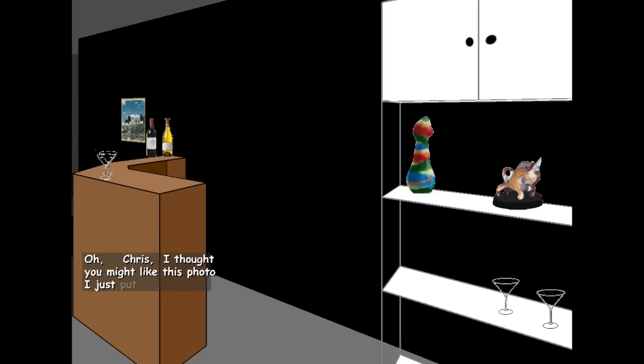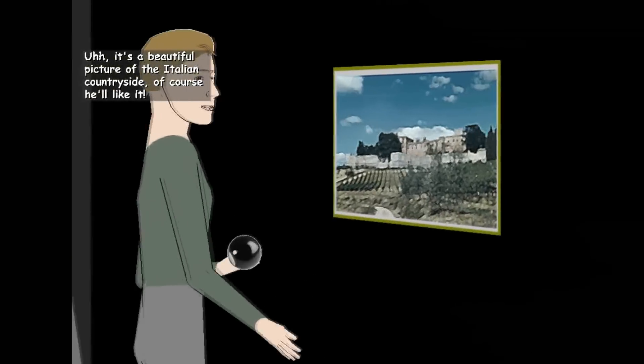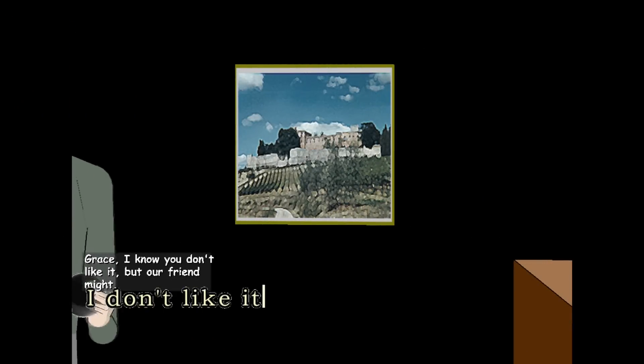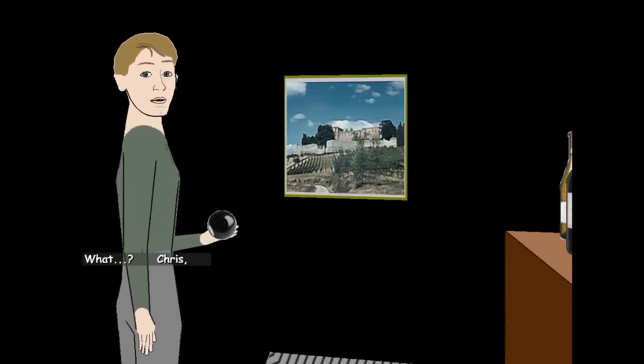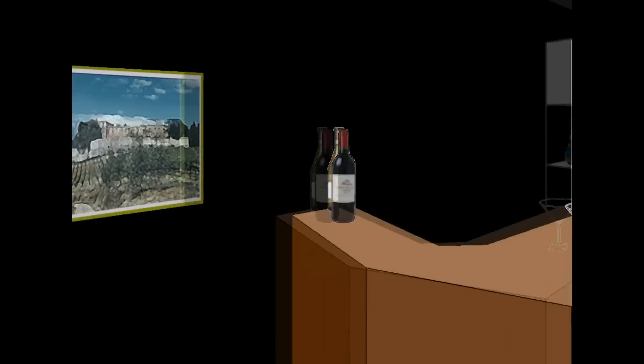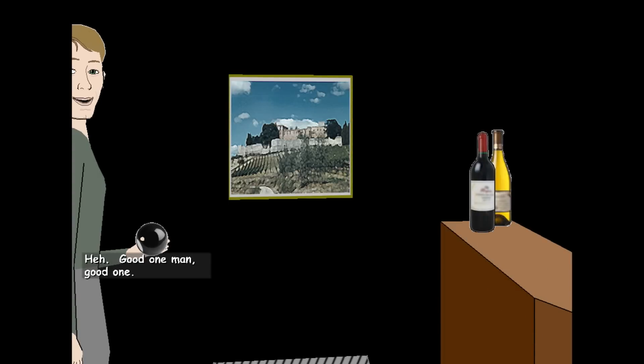Chris, I thought you might like this photo I just put up from our recent trip to Italy. It's a beautiful picture of the Italian countryside. Of course he'll like it. Grace, I don't—I know you don't like it, but our friend might. I don't like it much. What? Chris, that was just a well-intentioned little poke in the ribs between friends. Why are the eight people—Good one, man. Good one.